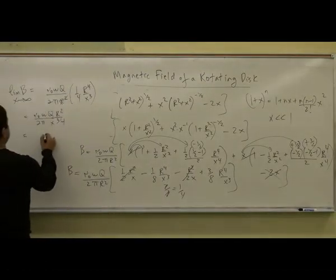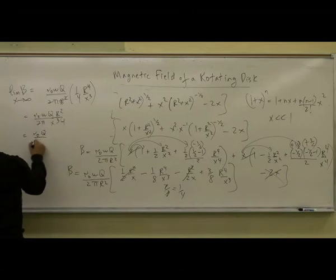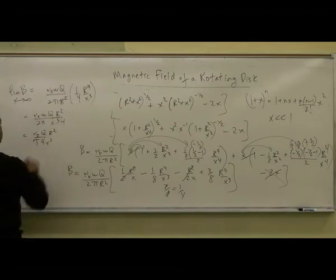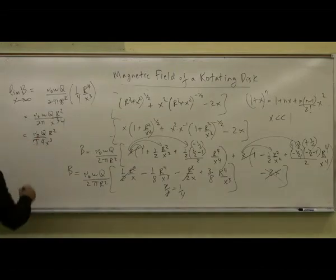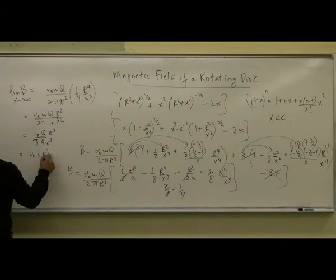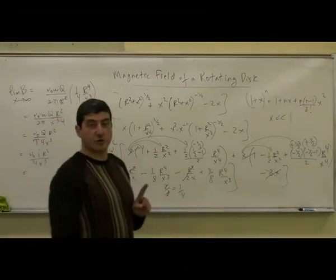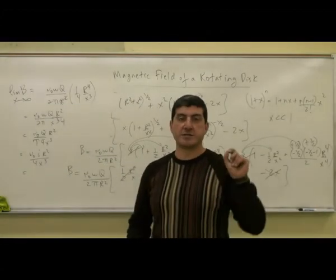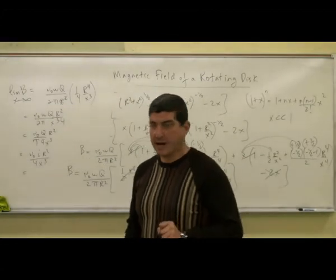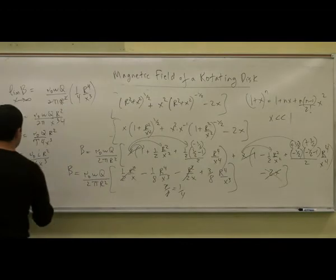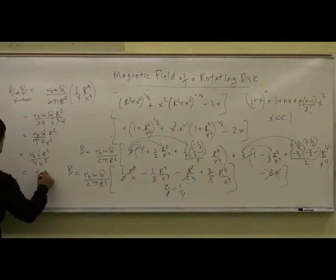I could also rewrite this again as mu zero, where 2 pi over omega is the period. I can have 4x cubed r squared. Q over t is equal to i r squared over 4x cubed. And remember, i r squared is equal to the magnetic moment over pi. So mu zero mu over 4 pi x cubed.